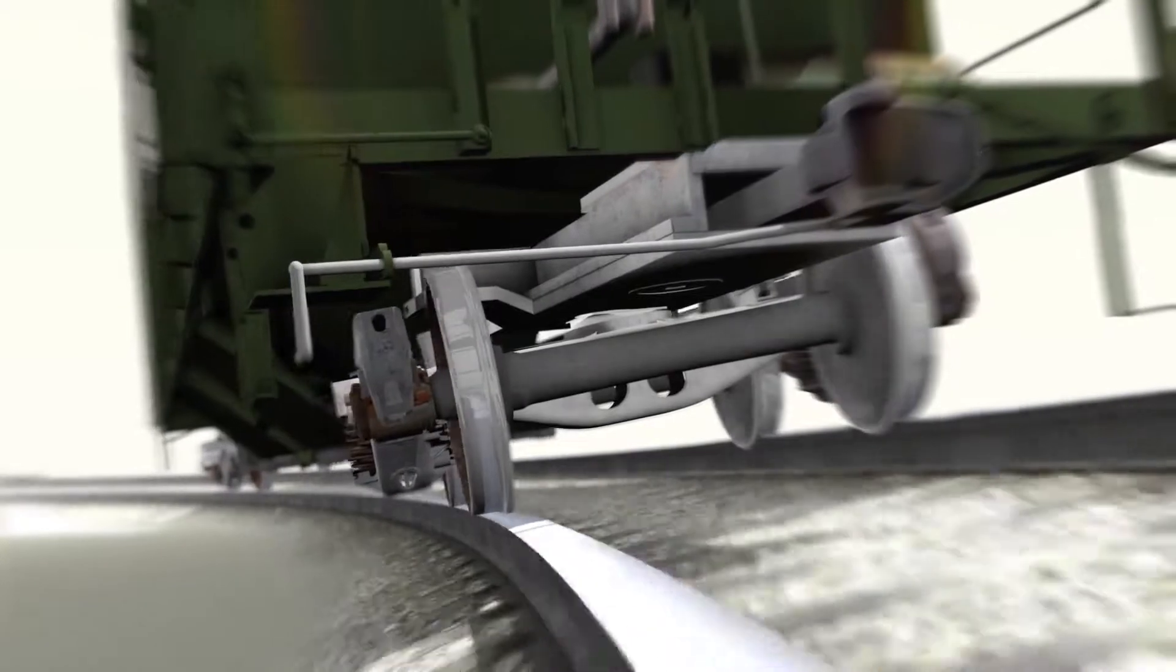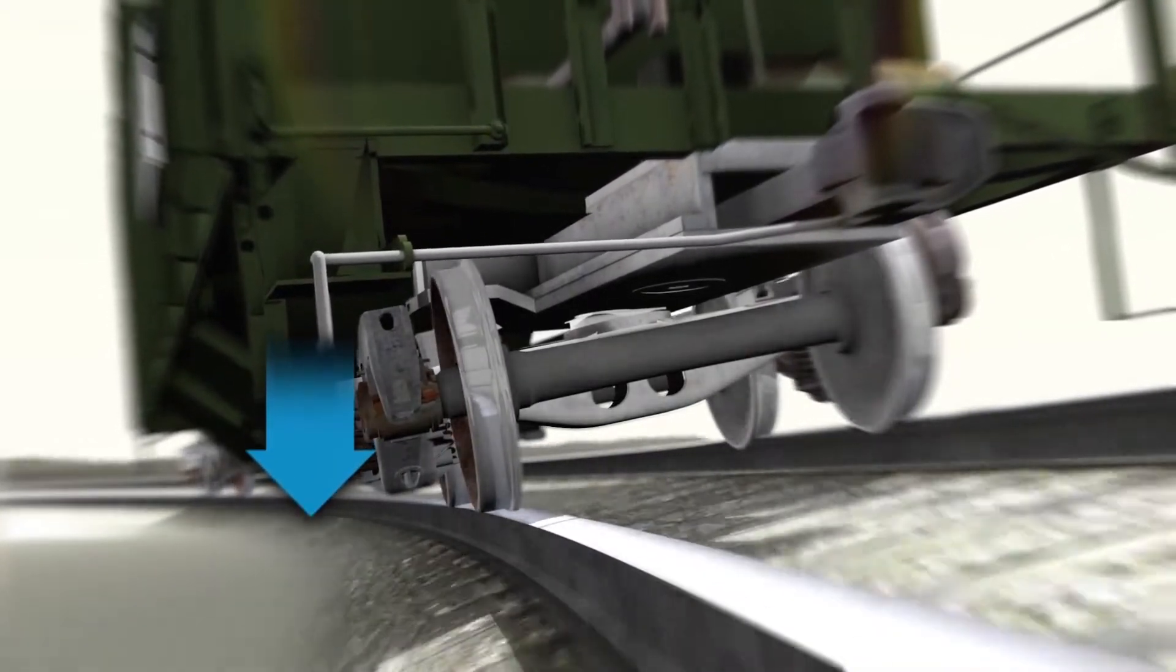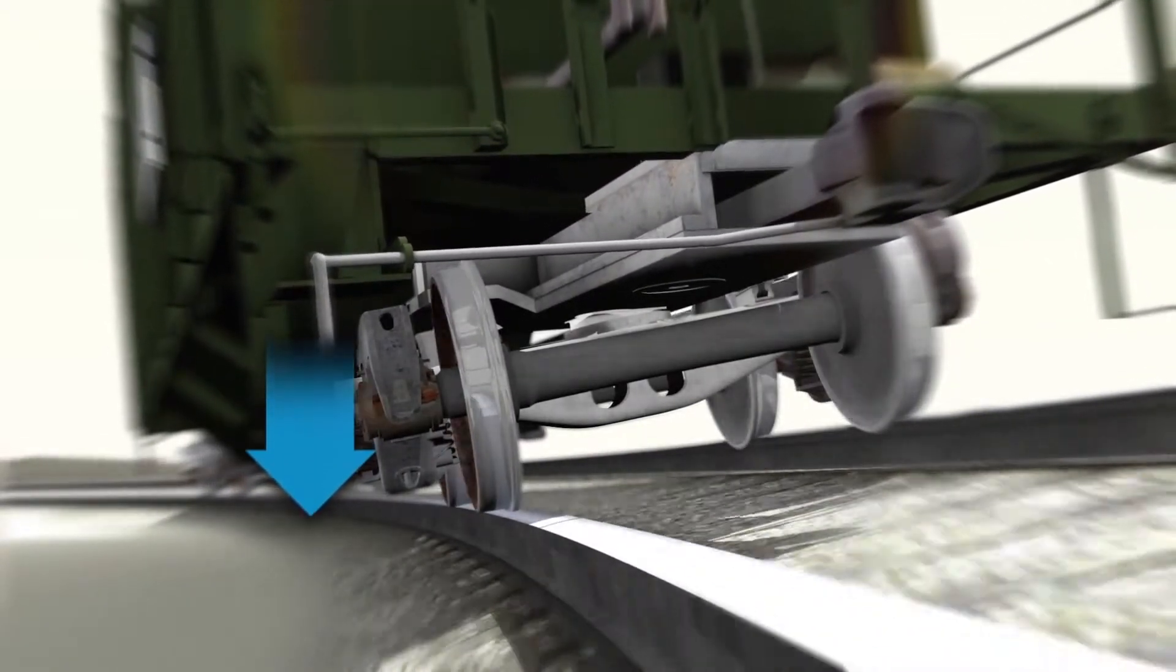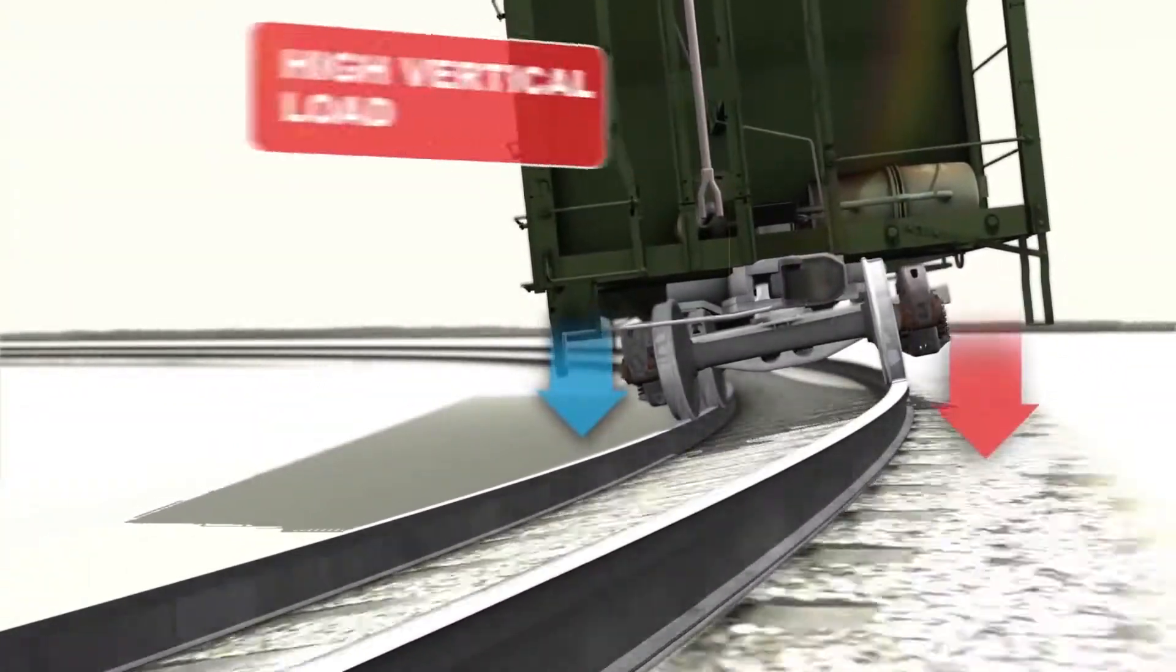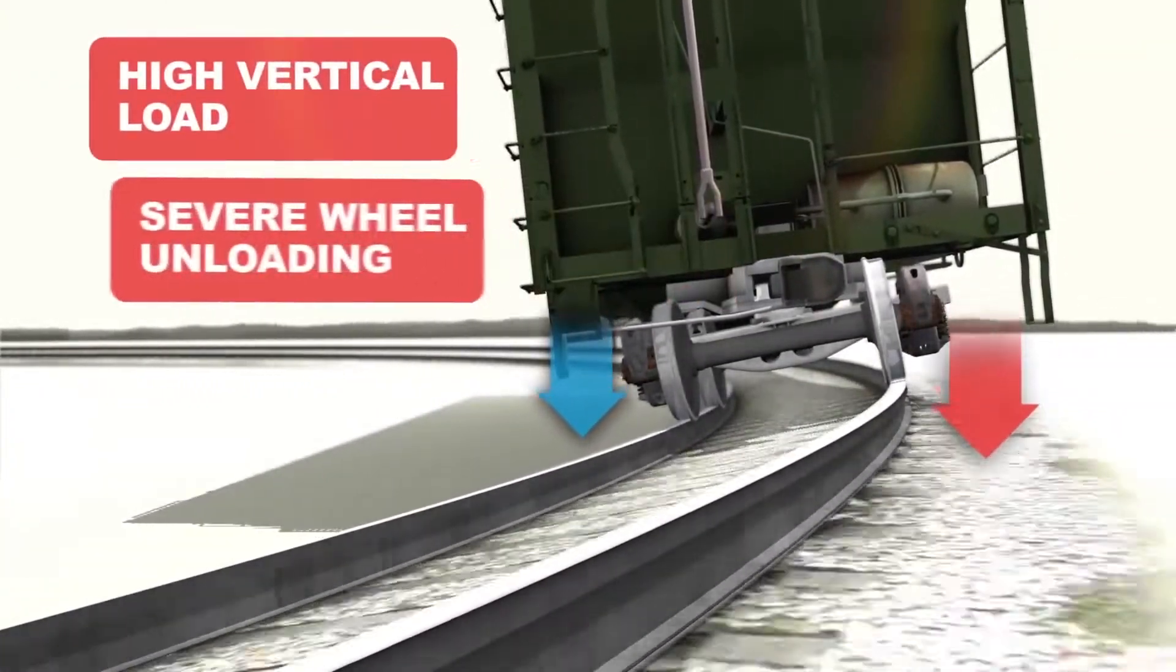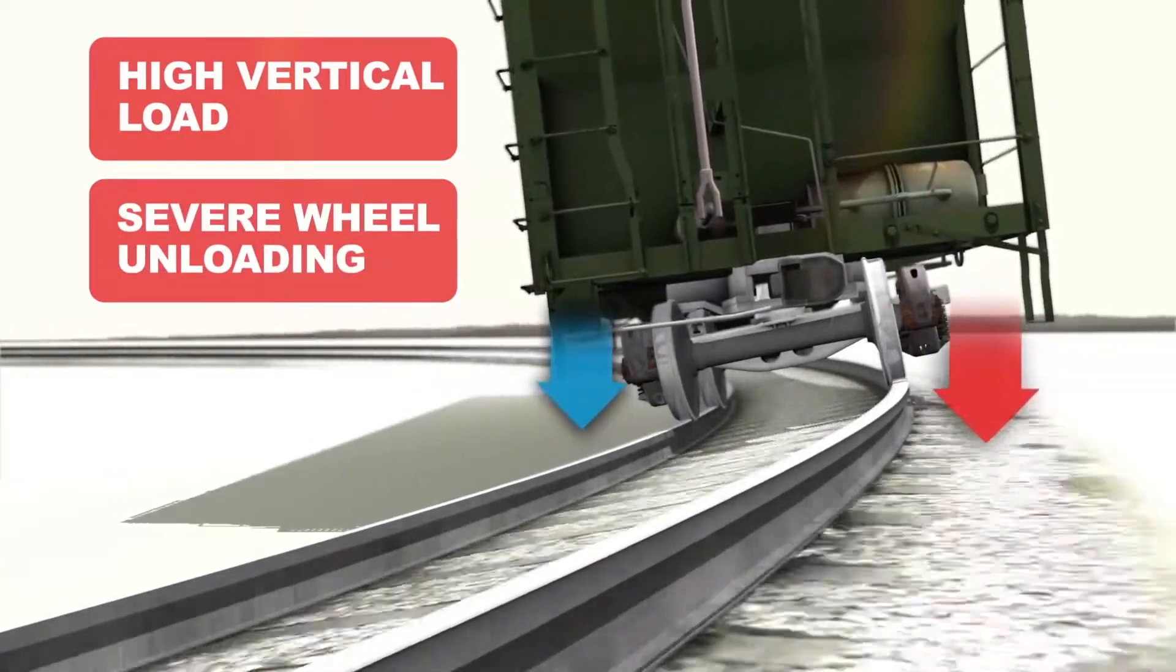At the same time, the other side of the truck is experiencing wheel unloading. The blue arrow represents a much smaller load through the opposite wheel. This phenomenon can result in high L over Vs and severe wheel unloading, both of which are dangerous situations.